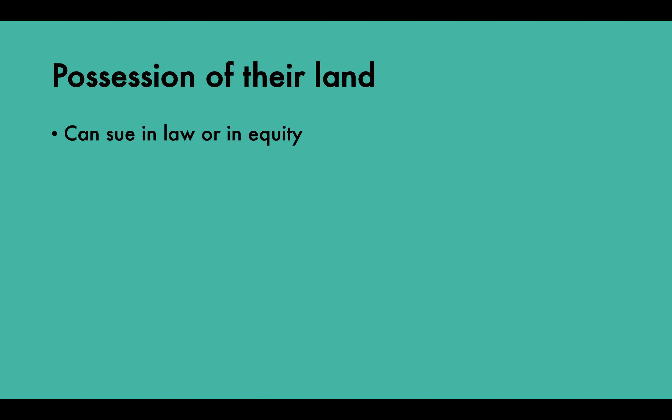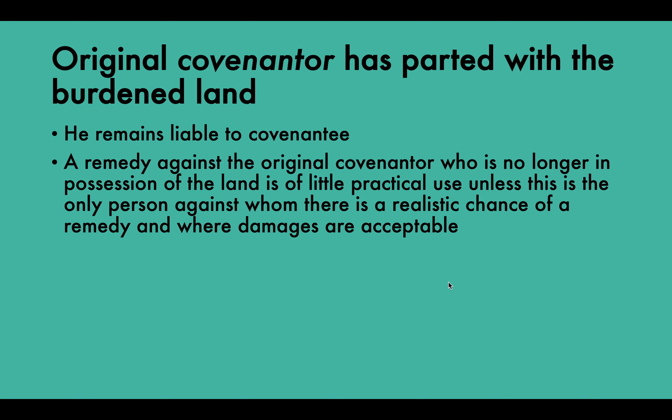The next situation is after the original covenantor has parted with the burdened land. If the original covenantor has left, he still remains liable to the covenantee. However, the claimant will usually want the covenant performed and will probably want to take on the person actually in possession of the burdened land. Consequently, a remedy against the original covenantor who is no longer in possession is of little practical use unless this is the only person against whom there is a realistic chance of a remedy and where damages are acceptable.